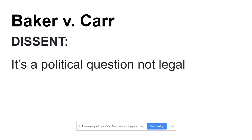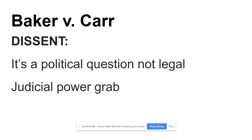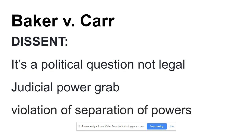There was a dissent — only two justices. They said this is a political question, not a legal one. Their argument: this is totally up to state legislatures, not a federal issue. They claimed it was a judicial power grab — the Supreme Court inserting itself as the arbiter of an issue it has nothing to do with, and a clear violation of separation of powers with the federal government overreaching into state government matters.